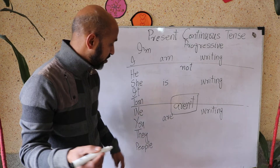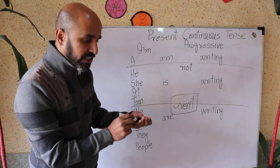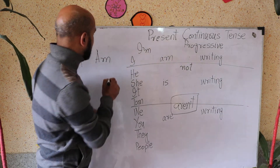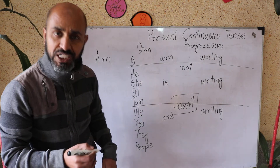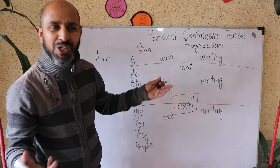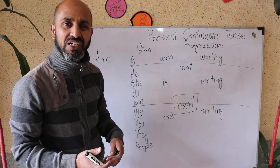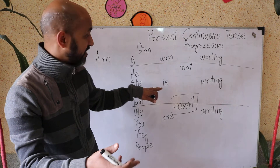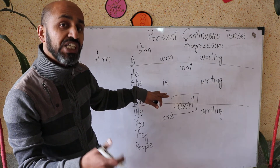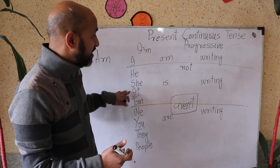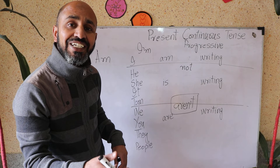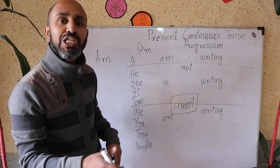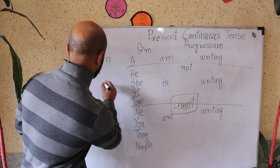For interrogatives, you place 'am' at the beginning of the question. For example: Am I writing? No, I'm not writing — I'm typing on my computer. Is he writing? No, he isn't, or yes, he is. Is she writing? No, she isn't, or yes, she is. Is it writing? Yes, it is, or no, it isn't. Is Tom writing? Yes, he is, or no, he isn't.